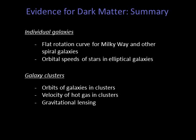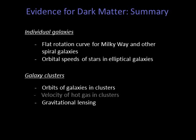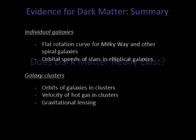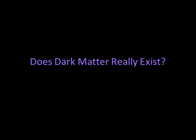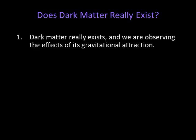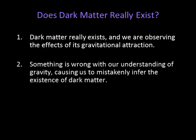It seems there is ample observational evidence for dark matter, both in individual galaxies and in galaxy clusters. But perhaps there is another solution — what if our understanding of gravity is wrong? Does dark matter really exist? We therefore have two options: either dark matter really exists and we are observing the effects of its gravitational attraction, or something is wrong with our understanding of gravity, causing us to mistakenly infer the existence of dark matter. Physicists are seriously looking into the latter — it's called MOND, Modified Newtonian Dynamics. Nevertheless, gravity has been so well tested that most astronomers prefer the first option.